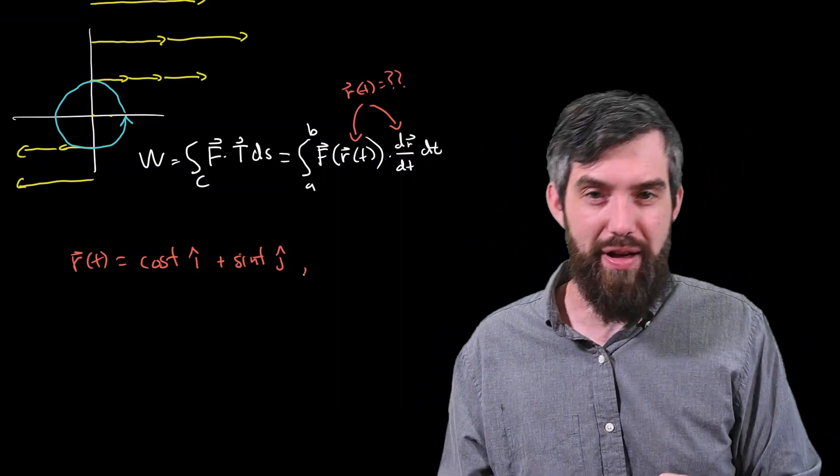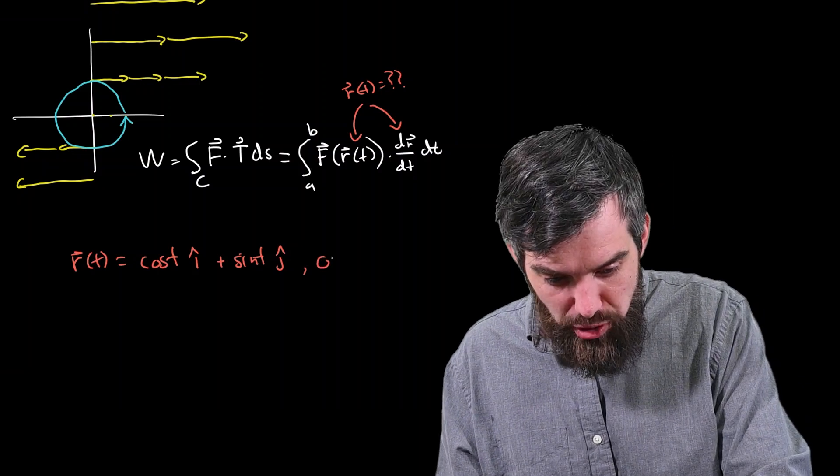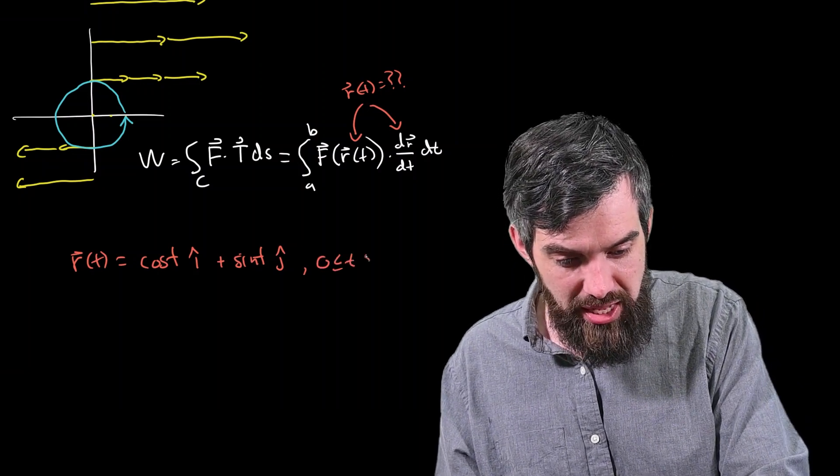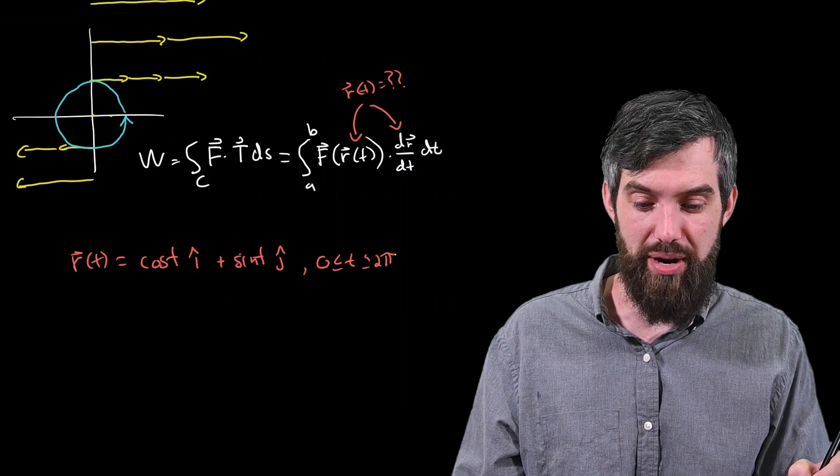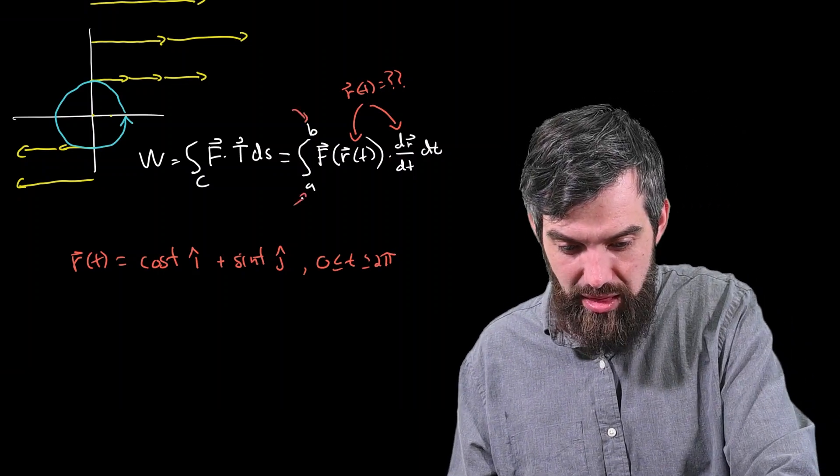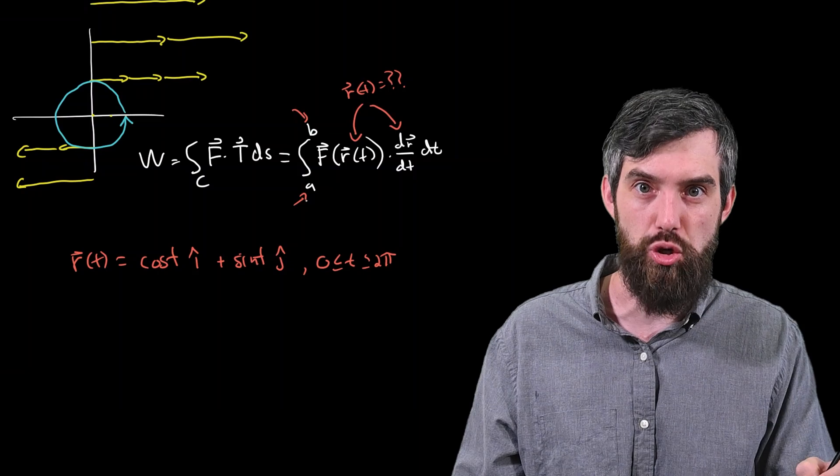I also will specify, as I always should do, that this is between the values of t being 0 and 2π. I have to specify those limits of integration. Indeed, they're going to become the a and the b in my formula, the 0 and the 2π.